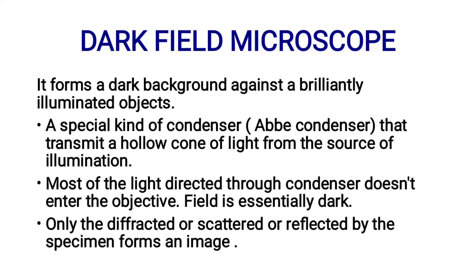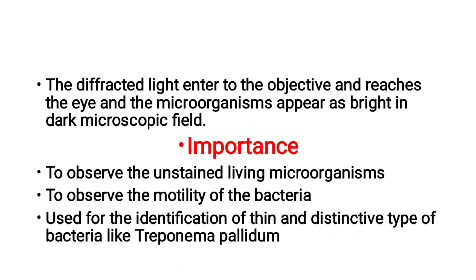Only the diffracted, scattered, or reflected light from the specimen forms an image. The field is essentially dark — hence the name dark field microscope. The diffracted light enters the objective and reaches the eye, causing the microorganisms to appear bright against a dark microscopic field.